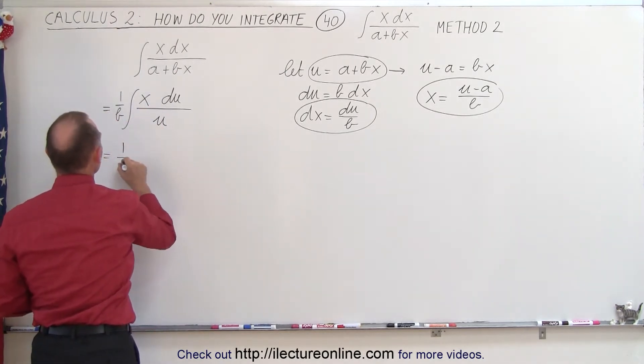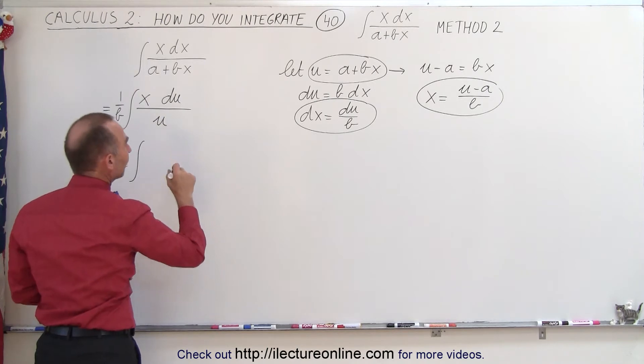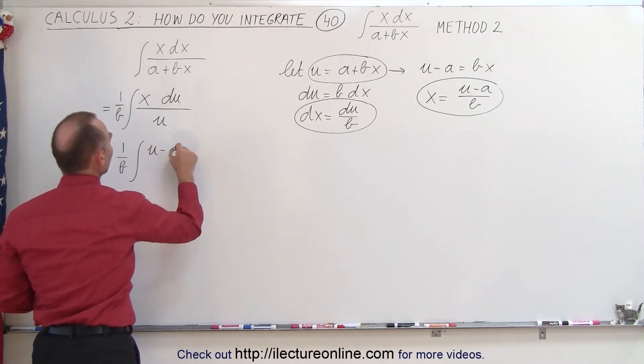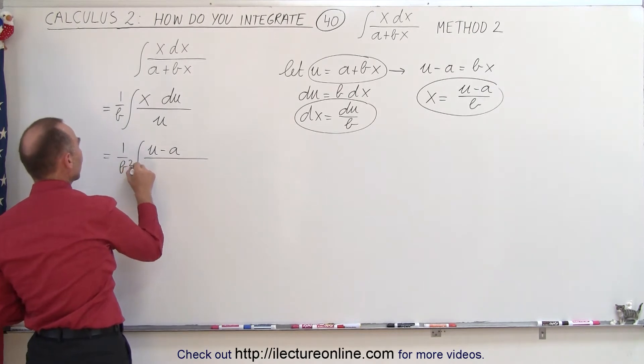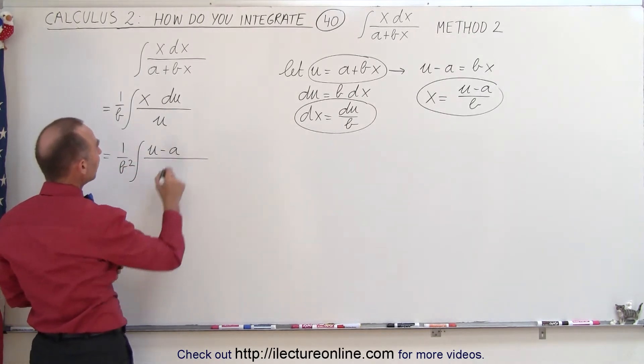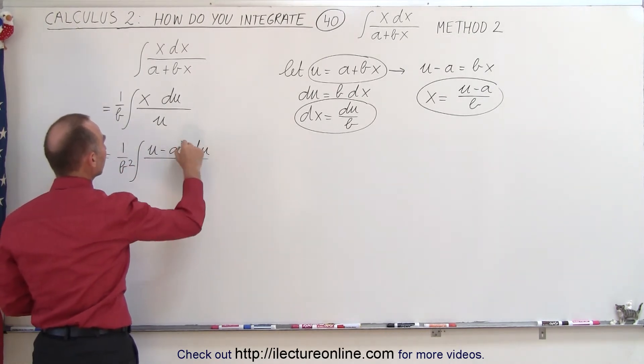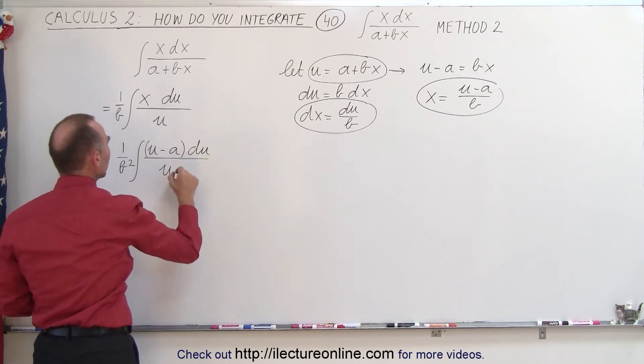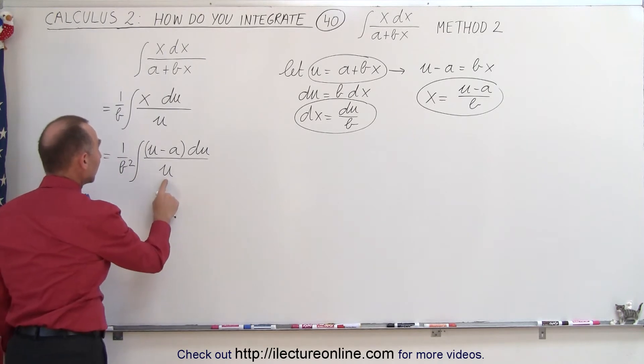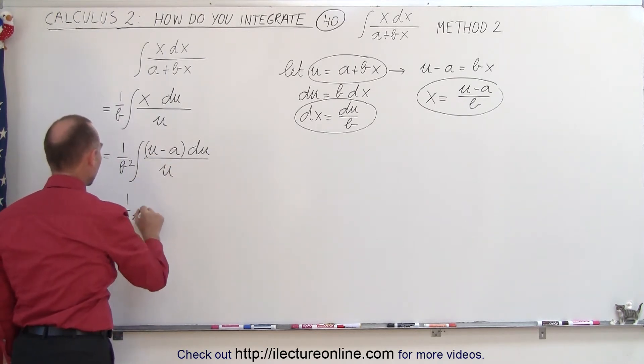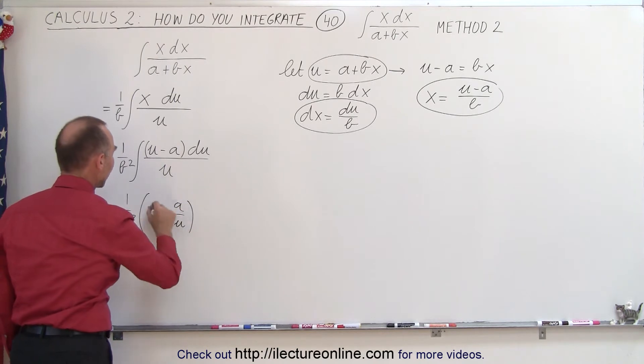And this becomes 1 over b times the integral of u minus a divided by b. But let's go ahead and take that outside the integral sign, make that b squared. We have the du here and then we have a u in the denominator. And next what you do then is you divide the denominator into the numerator. So this becomes 1 over b squared times u divided by u is 1 minus a divided by u times du.